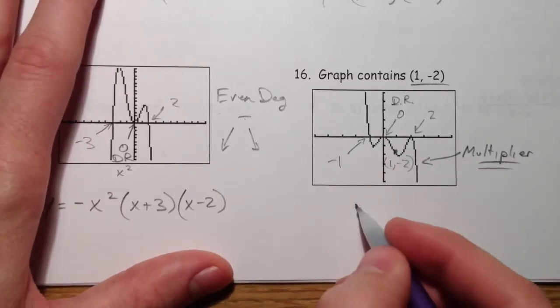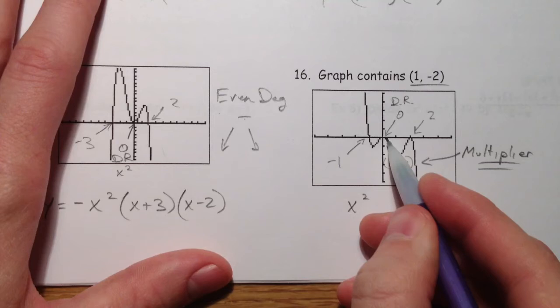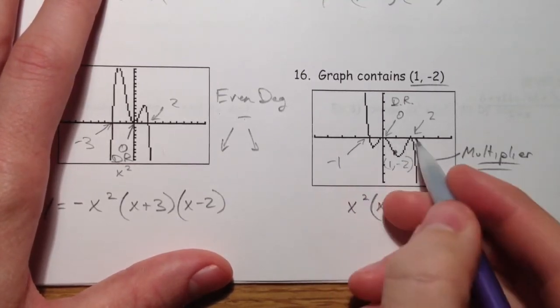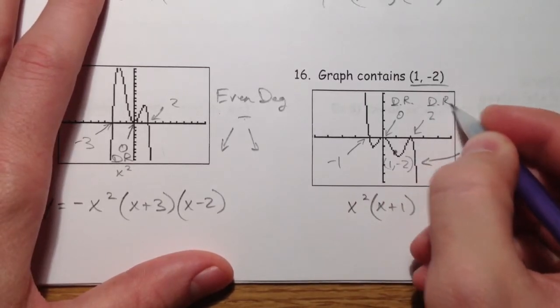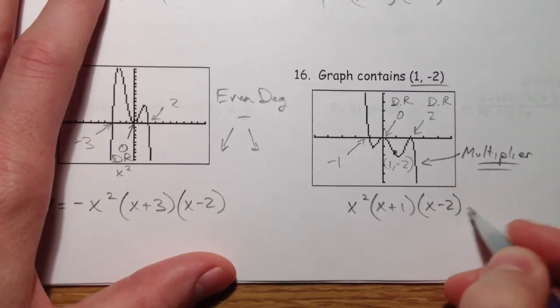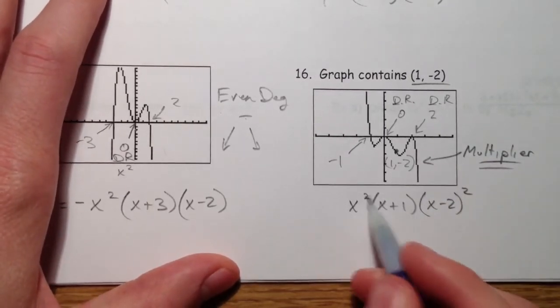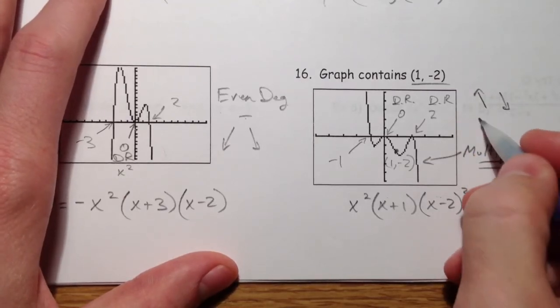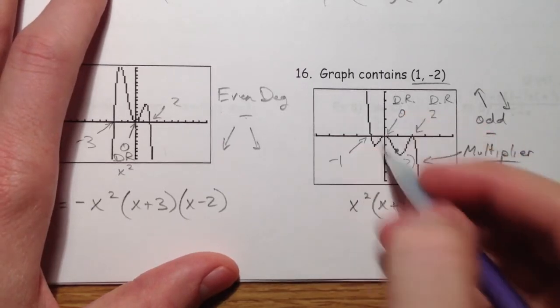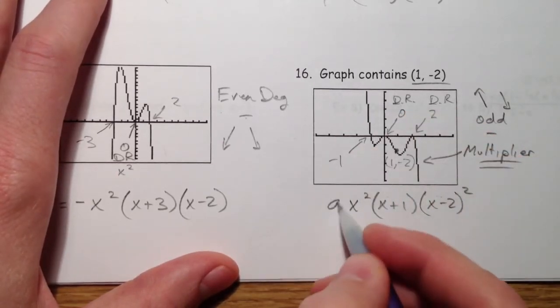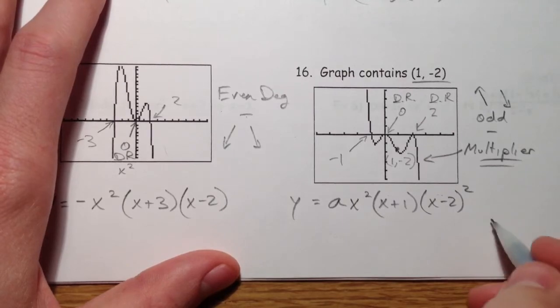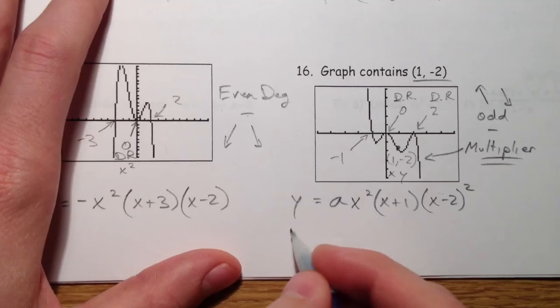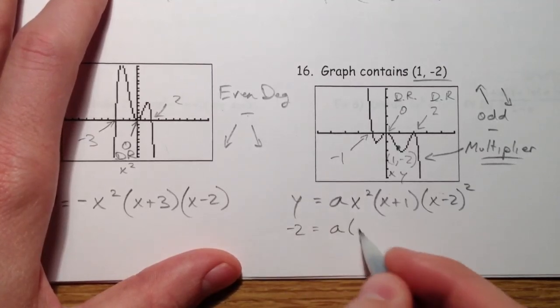So x squared is a double root like we said. x plus 1 for that one. And 2 is a double root as well. x minus 2 squared. So you have 1, 2, 3, 4, 5. And that makes sense because it's going opposite direction. So it should be an odd degree. And we notice that it should be a negative a. But I'm just going to put an a out front here. Because now plug in 1, negative 2. This is x. This is y.